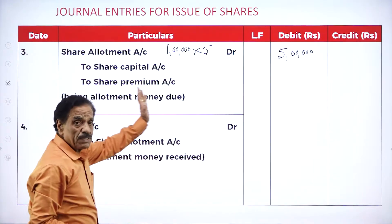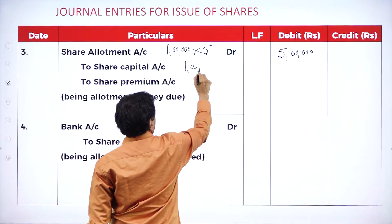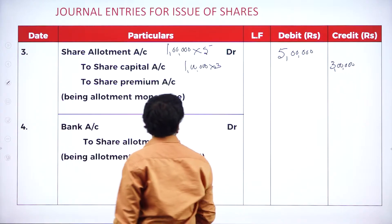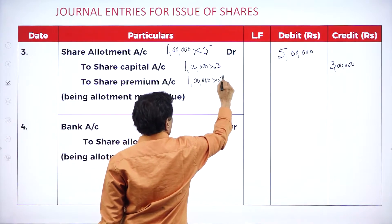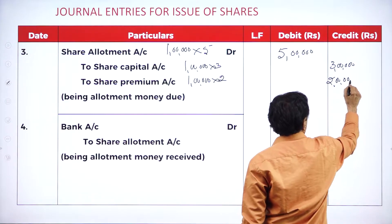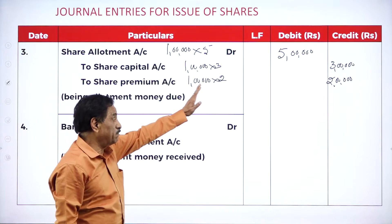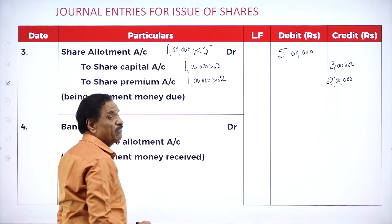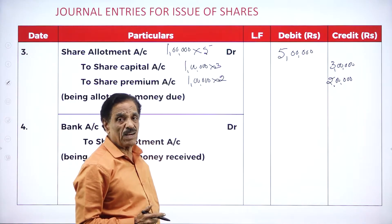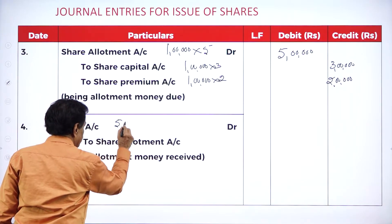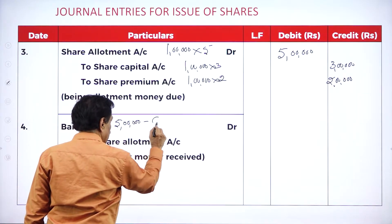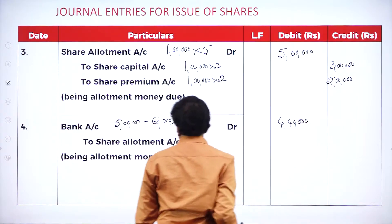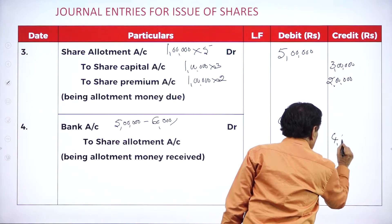Entry: share allotment account debit 5 lakh — to share capital 1 lakh into 3 = 3 lakh real money, to share premium 1 lakh into 2 = 2 lakh excess. Total to receive: 5 lakh. Already received in application: 60,000. Balance: 4 lakh 40,000. Bank account debit to share allotment account: 4,40,000 — being allotment money received.